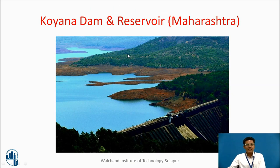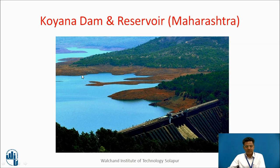This is Koena dam and its reservoir from Maharashtra state. This figure shows that the periphery of the pool of water in the reservoir follows a contour line, and this principle we are going to use whenever we estimate storage capacity of reservoirs.